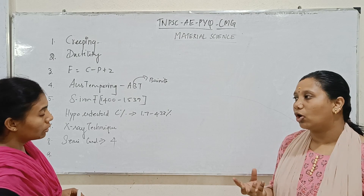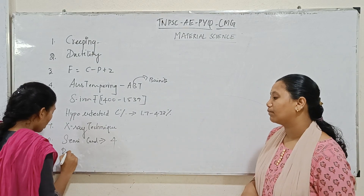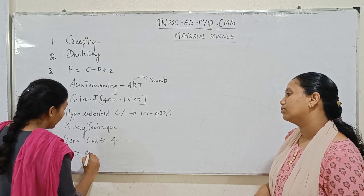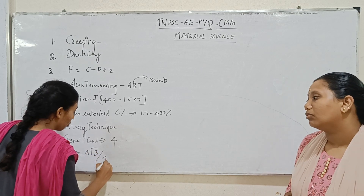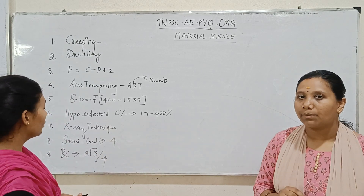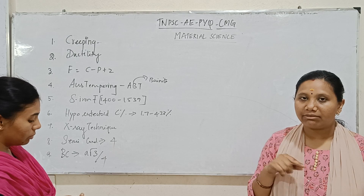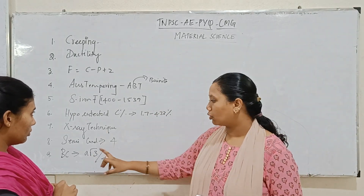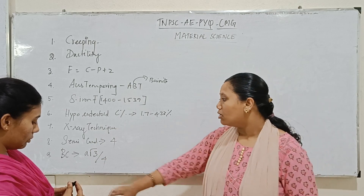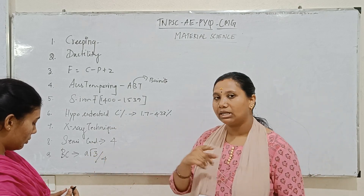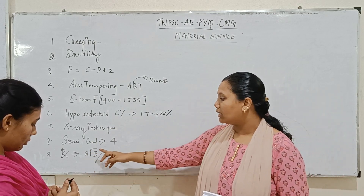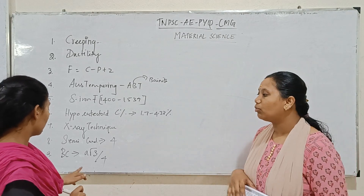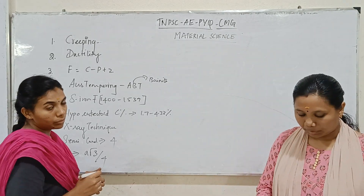For a body-centered cubic (BCC) lattice, the atomic radius formula is: r equals a times root 3 divided by 4. So BCC atomic radius r = a√3 / 4, where a is the lattice parameter.